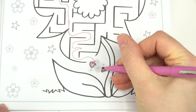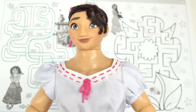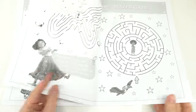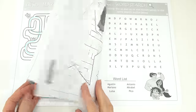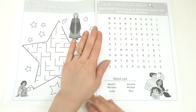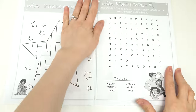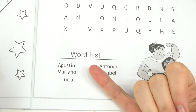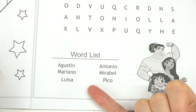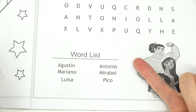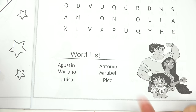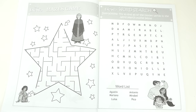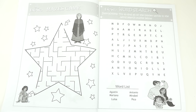I want a word search. Let's see if this activity has any word searches. Oh, here's one! We've got the word list: Augustine, Mariano, Louisa, Antonio, Mirabelle, and Pico. Let me give you some time to find the words, or you can pause the video.